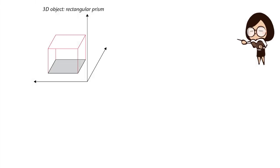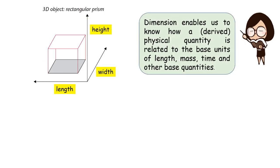When we observe an object, the first thing we notice is dimension, such as length, width, and height. Dimension enables us to know how a physical quantity is related to the base units of length, mass, time, and other base quantities.